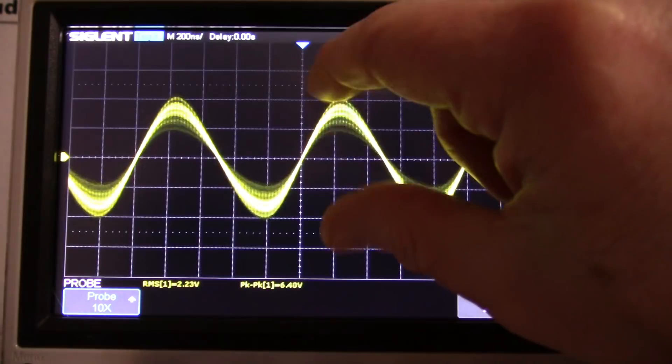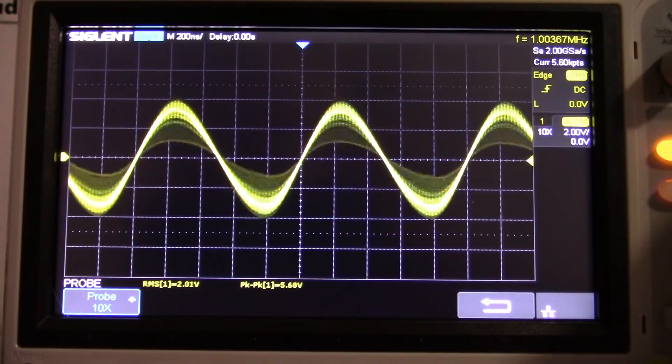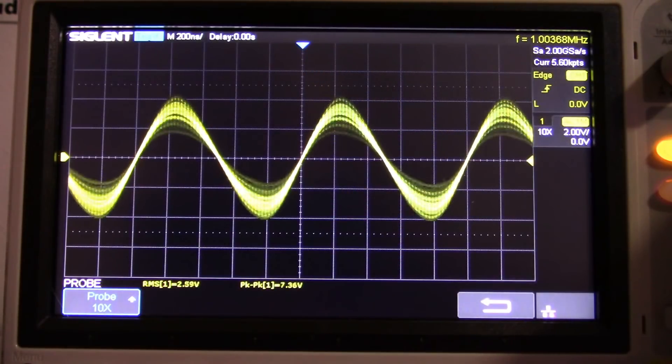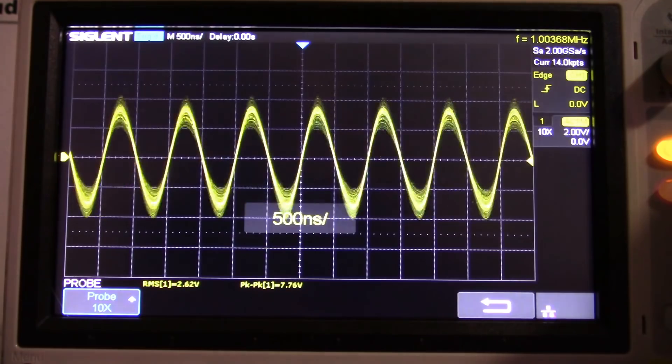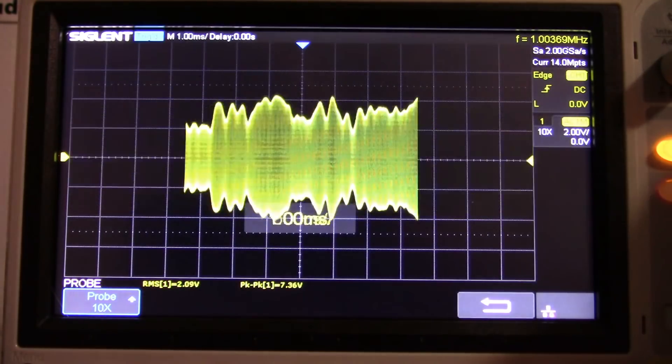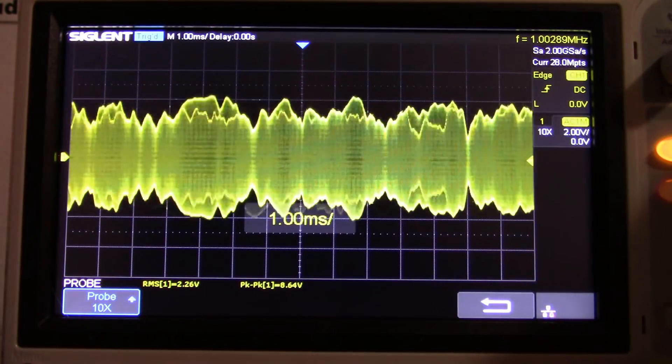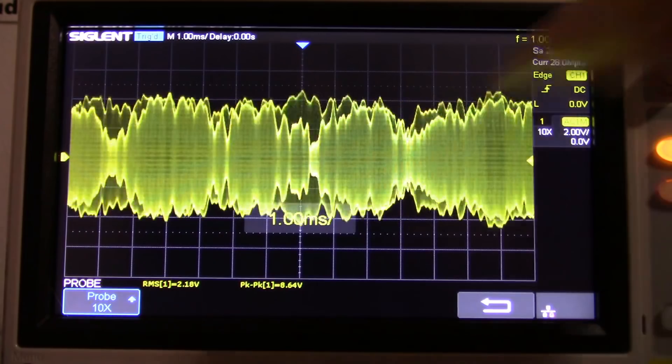So let me put a signal on there and see what it looks like. So now you can see the waveform modulating with the audio signal. So now I can adjust the scope and see the modulated carrier.